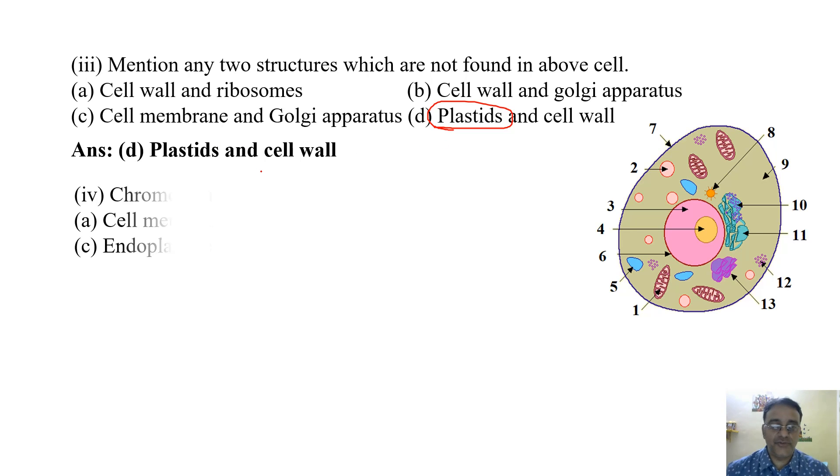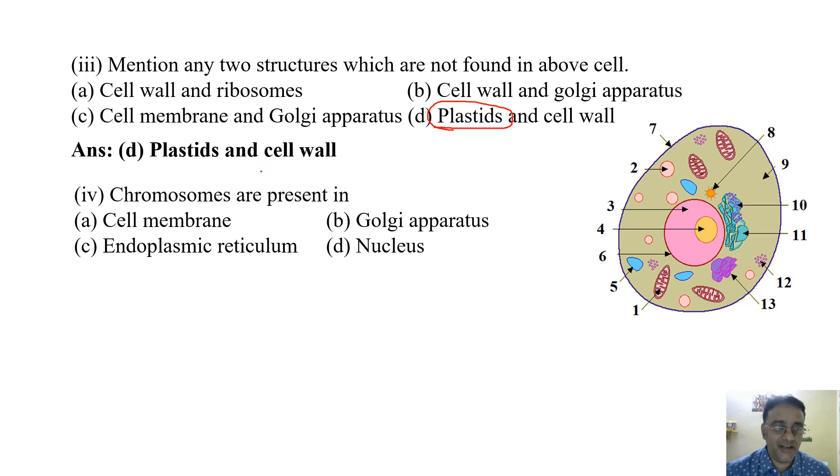Now the fourth question. Chromosomes are present in: cell membrane, Golgi apparatus, endoplasmic reticulum, or nucleus. They are present in the nucleus. The correct option is (d).